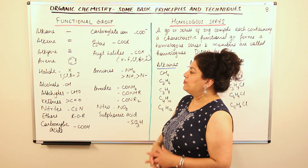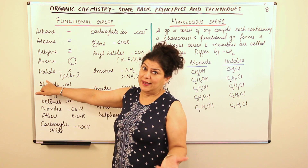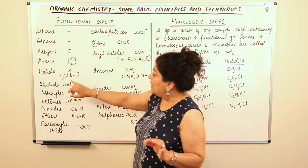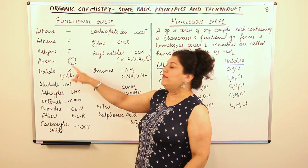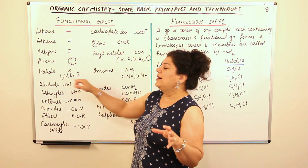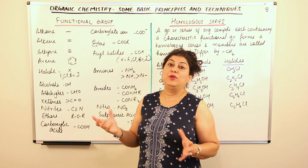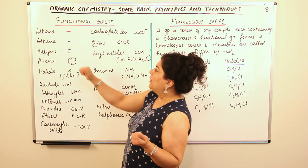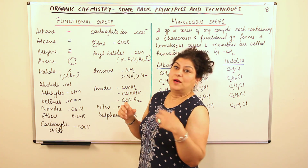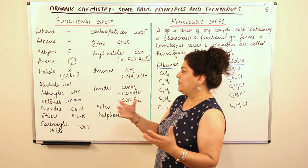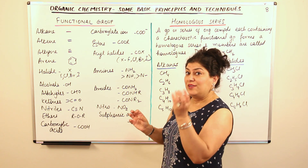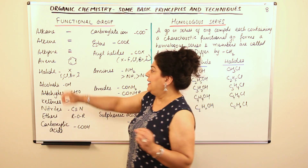Other functional groups may be halides — that is, haloalkanes and haloarenes — a separate chapter you will study in class 12. Halides are where one of the hydrogens of a hydrocarbon is replaced by a halogen: fluorine, chlorine, bromine, or iodine. You could have chloromethane, dichloromethane, bromomethane, or whatever. When a halogen substitutes a hydrogen, it results in the formation of that functional group, known as a halide.